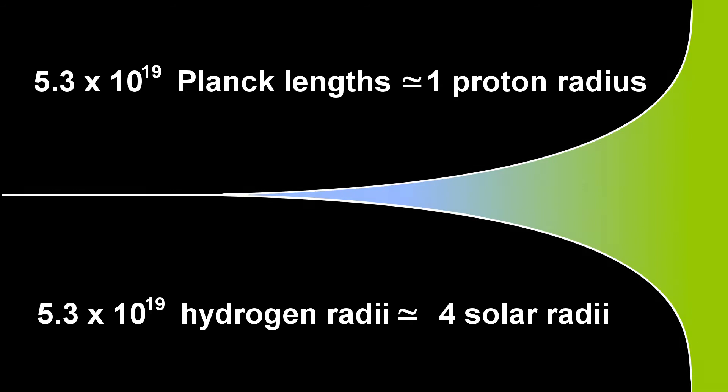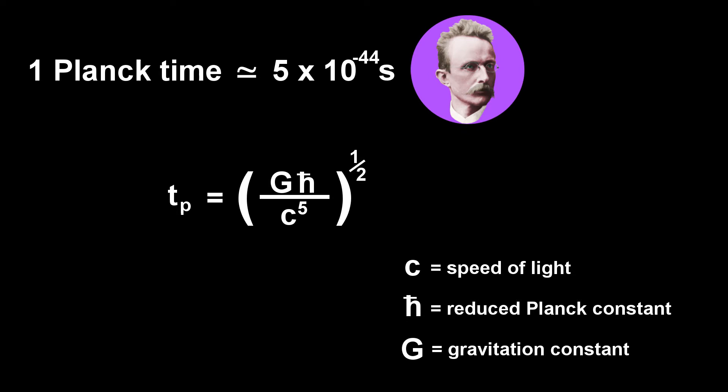If the Planck length seems shockingly small, the Planck time is outrageous. One unit of Planck time is about 5 times 10 to the negative 44 seconds. It's the time light takes to travel the Planck length.